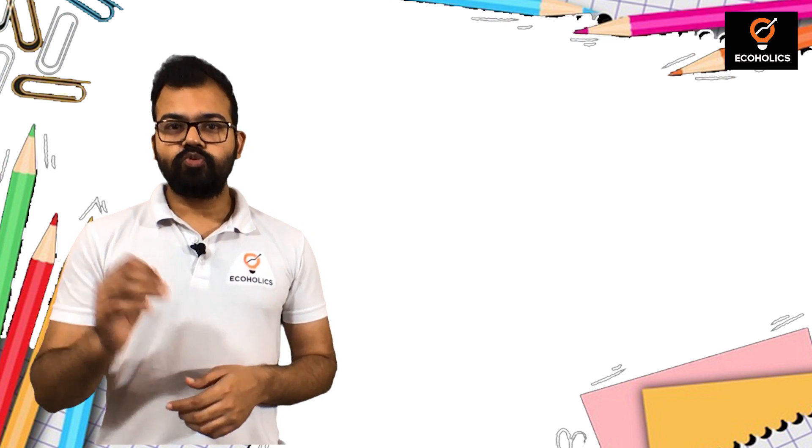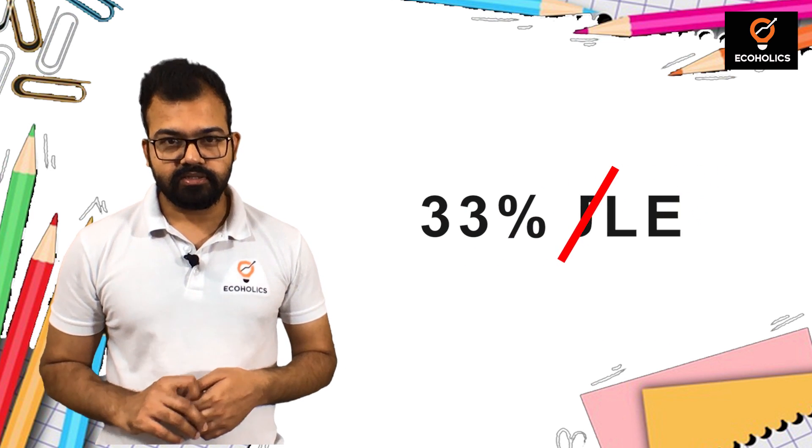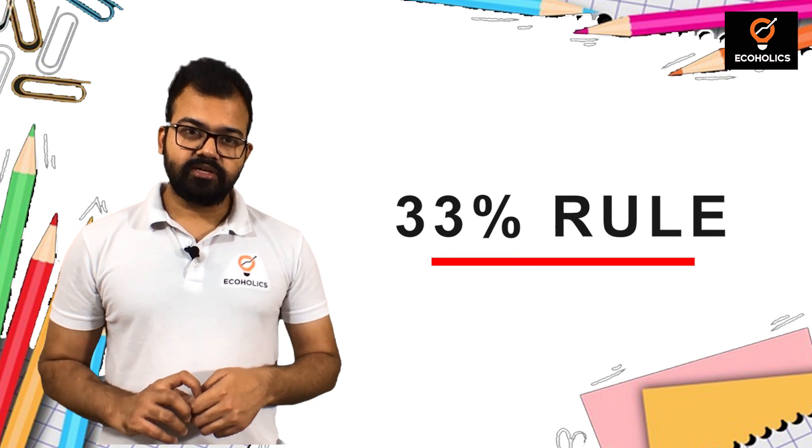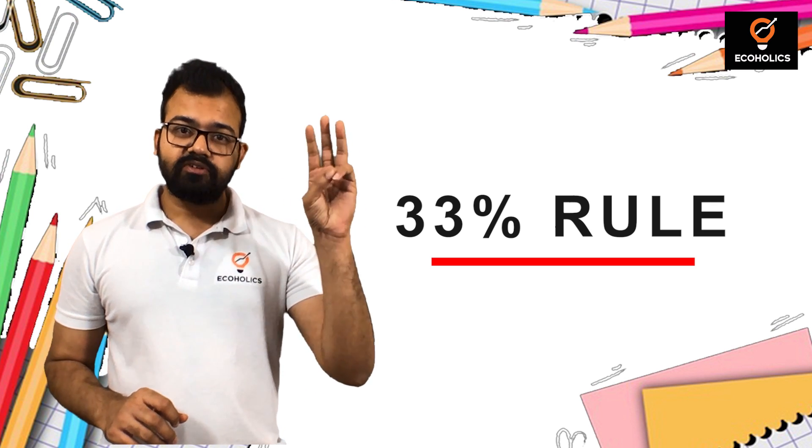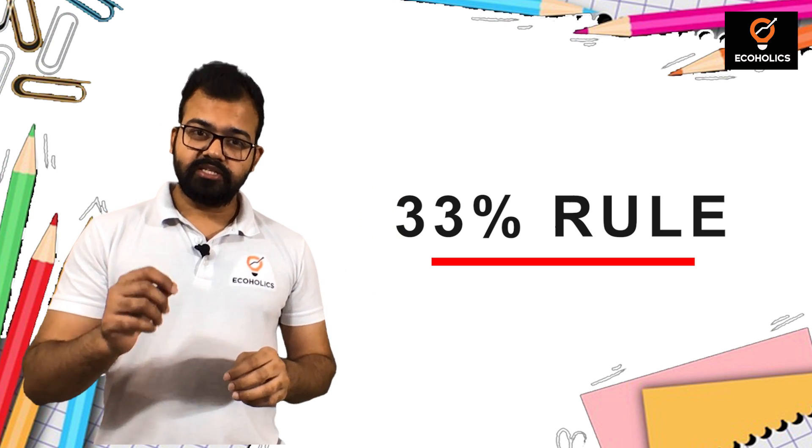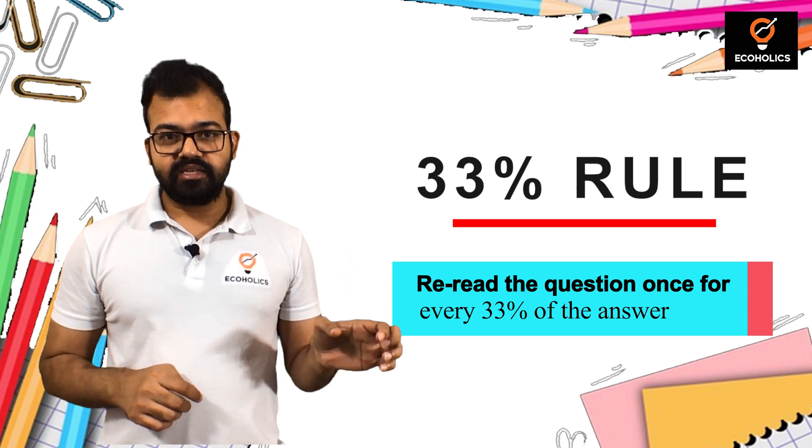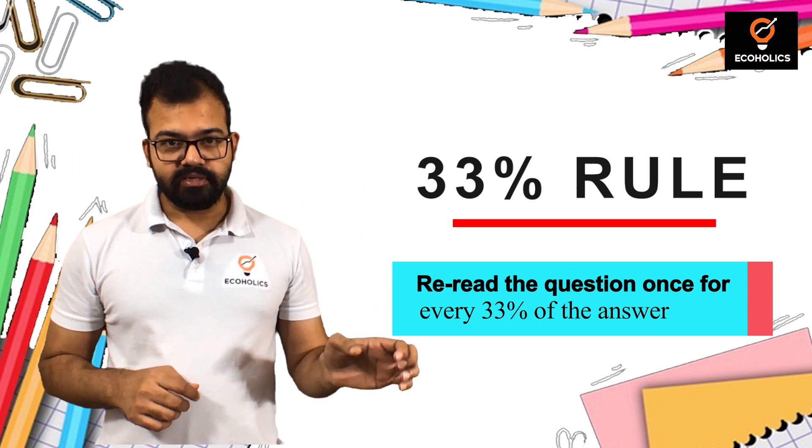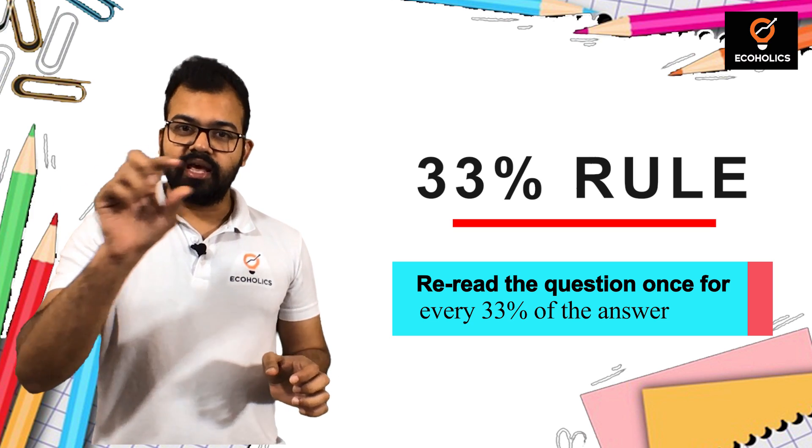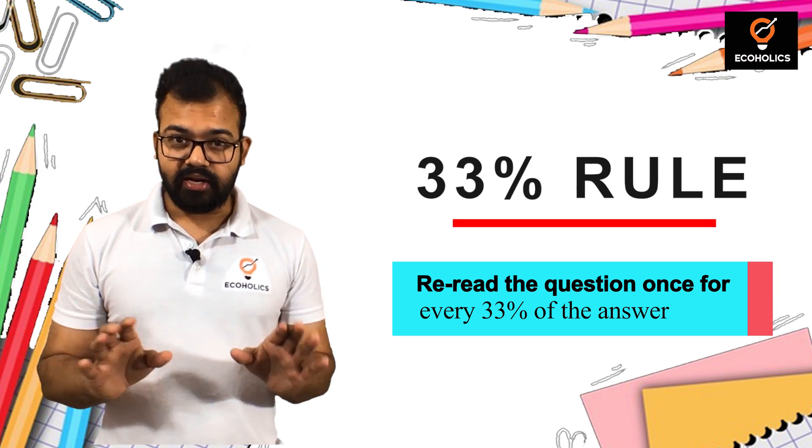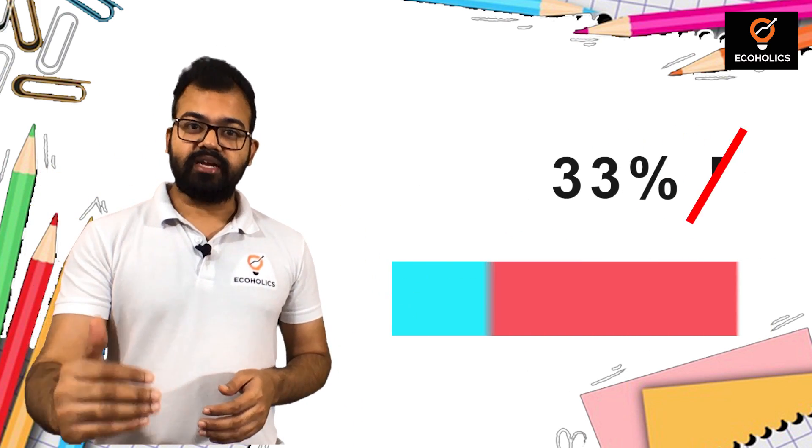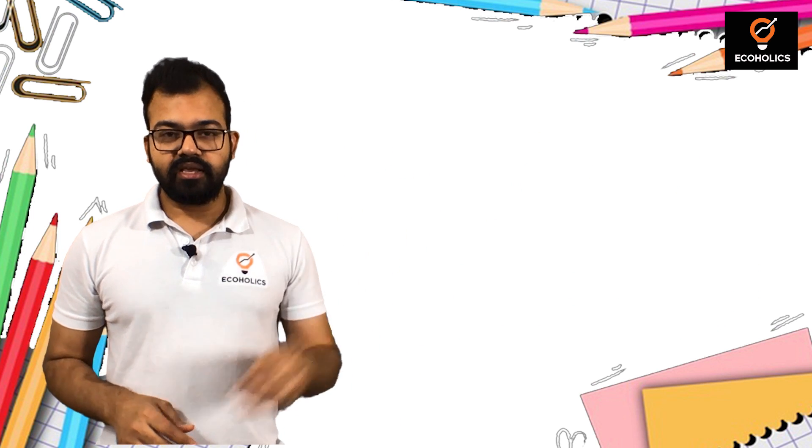There is one rule called the 33 percent rule. In that rule, if you are writing an answer for three pages, then on every page you have to reread the question. While writing the answer, if you complete 33 percent, go back to the question, reread it very quickly, see the keywords, and then write again.